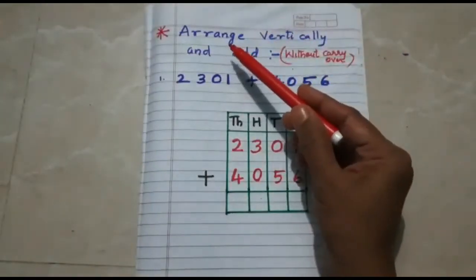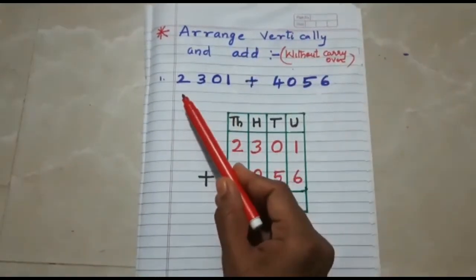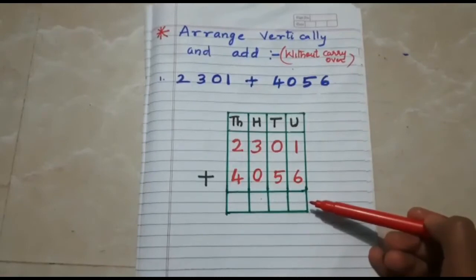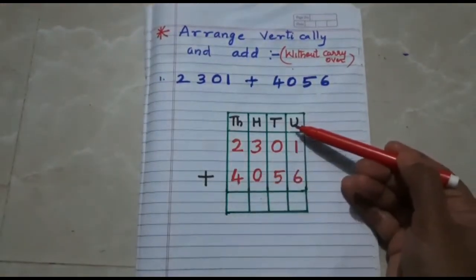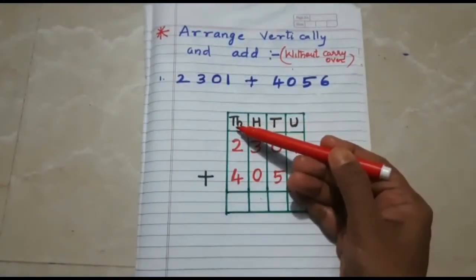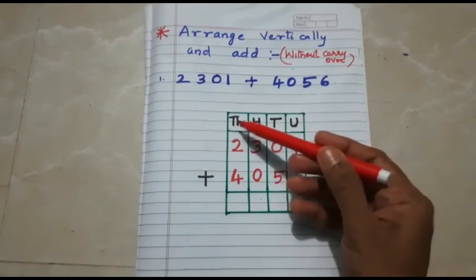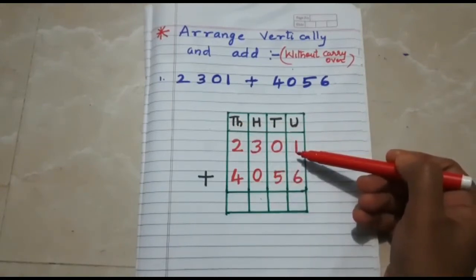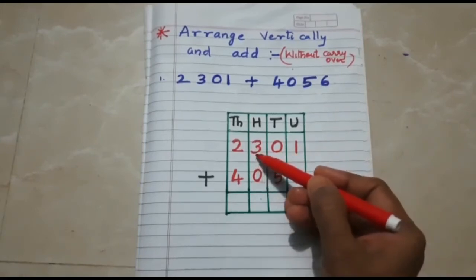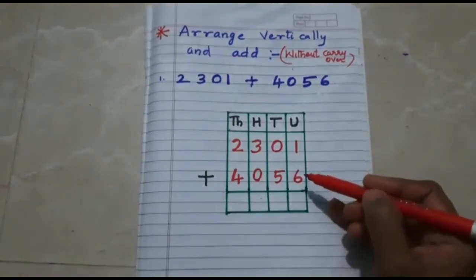Our next part is to arrange vertically and add without carryover. I have taken here 2,301 plus 4,056. I have drawn columns to show the place value of the digits: units, tens, hundreds, and thousands. After writing the place values, you must start filling up the places right from units, then go to tens, then hundreds, then thousands. After finishing this arrangement, you proceed to the addition.